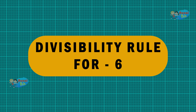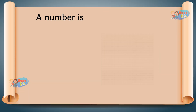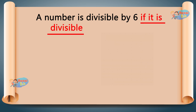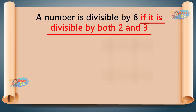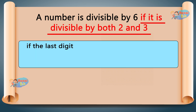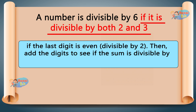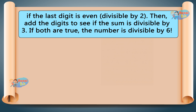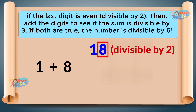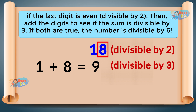Divisibility Rule for 6: A number is divisible by 6 if it is divisible by both 2 and 3. First, check if the last digit is even (divisible by 2). Then add the digits to see if the sum is divisible by 3. If both are true, the number is divisible by 6. Like 18 — last digit is 8, so it is divisible by 2. 1 plus 8 equals 9, divisible by 3. So 18 divided by 6 equals 3.